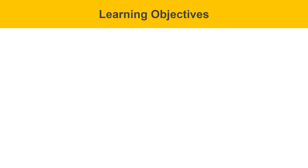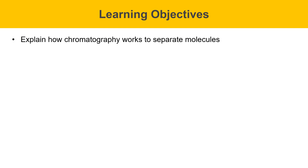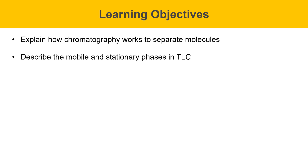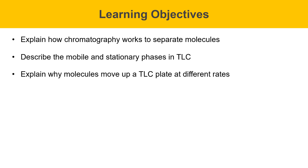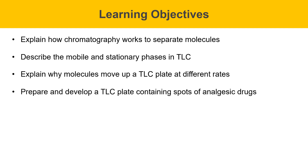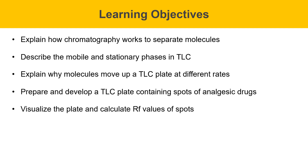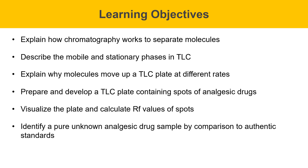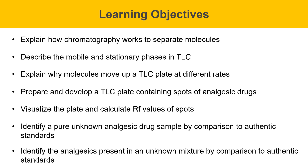The learning objectives for this experiment are described on this slide. At the end of this experiment, you'll be able to explain how chromatography works to separate molecules, describe the mobile and stationary phases in TLC, and explain why molecules move up a TLC plate at different rates. You'll be able to prepare and develop a TLC plate containing spots of analgesic drugs — those are pain relievers — visualize the plate and calculate RF values (that stands for retention factor) of the spots, identify a pure unknown analgesic drug by comparison to authentic standards, and identify the analgesics present in an unknown mixture by comparing those to authentic standards as well.